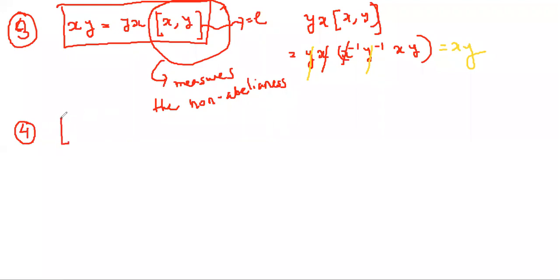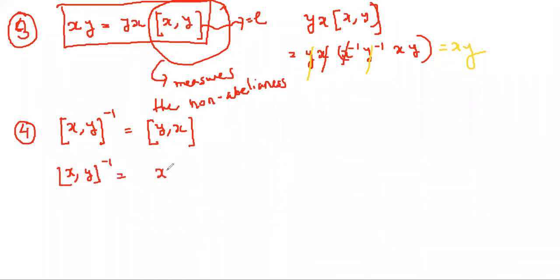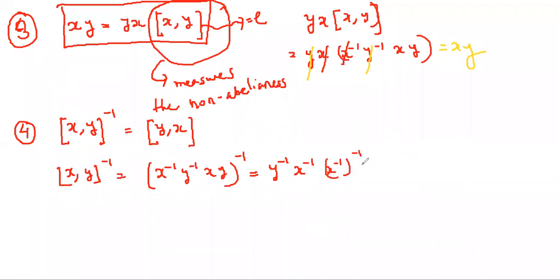The next important property is: [X,Y] inverse equals [Y,X]. The commutator of X,Y inverse equals X inverse Y inverse XY, whole inverse. Using the property that G1 G2 inverse equals G2 inverse G1 inverse, this becomes Y inverse X inverse, which is Y X — that is [Y,X].